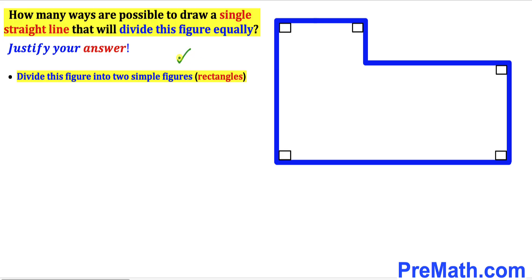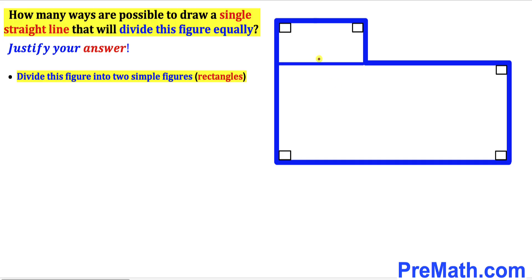Our very first step is to divide this given complex figure into two simple figures — in other words, two rectangles. If I draw a line parallel to this side, we can see that we have divided this complex shape into two simple rectangles.